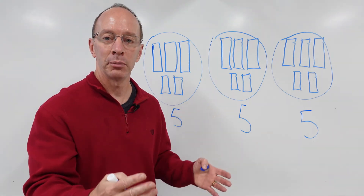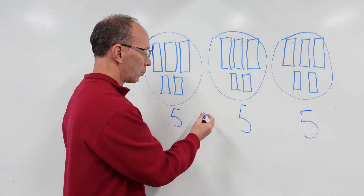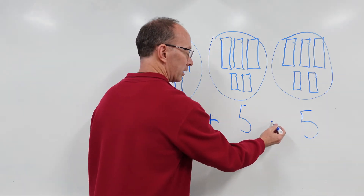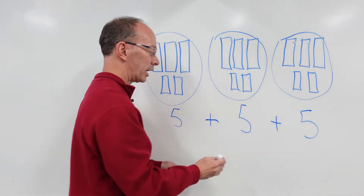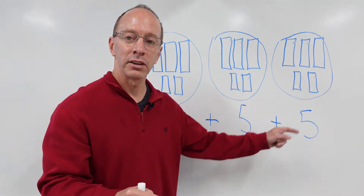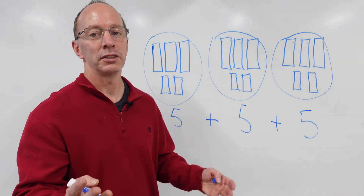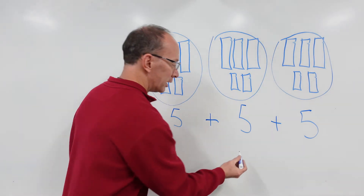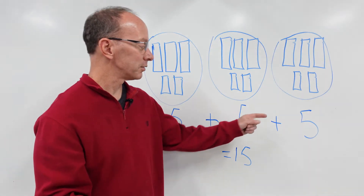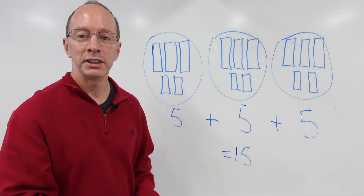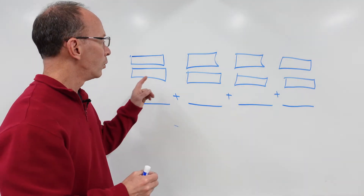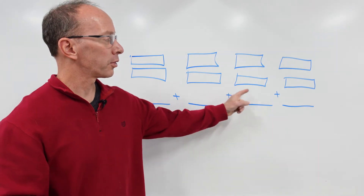Once again, like repeated addition, we have the same number of objects in each group. So we're going to take five plus five plus five. Five plus five is ten, and ten plus five is fifteen. Five plus five plus five equals fifteen — hey, you're a math pro!